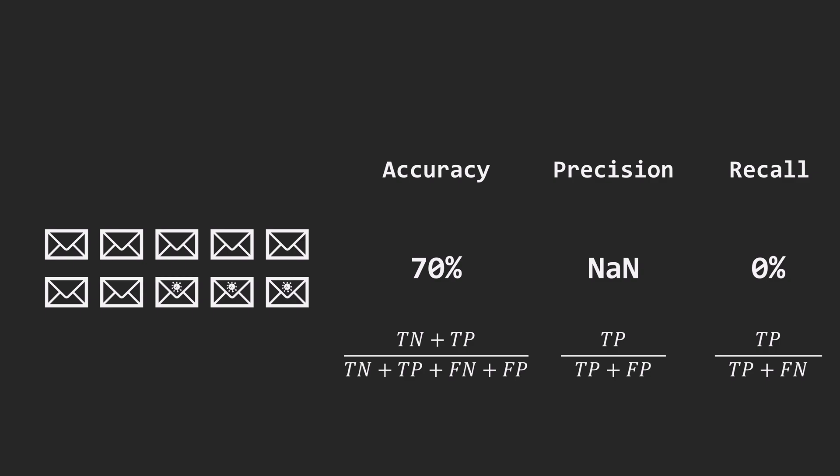You can pause the video for a moment and try to determine the model predictions here. This scenario occurs when the model labels all emails as non-spam. It gets a high accuracy simply because most emails are indeed regular, but it fails completely at spam detection.